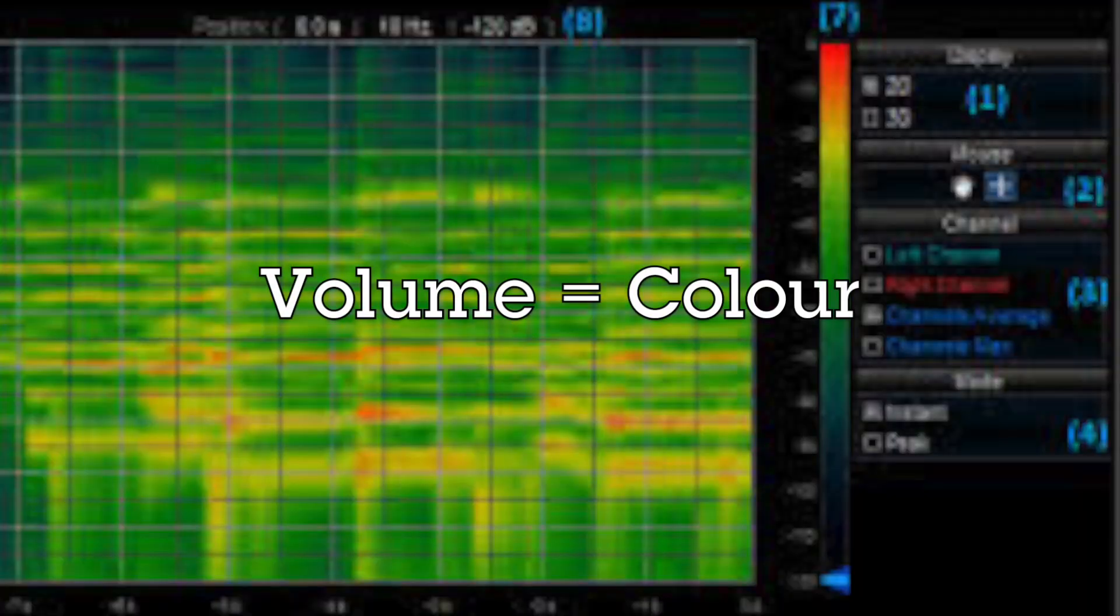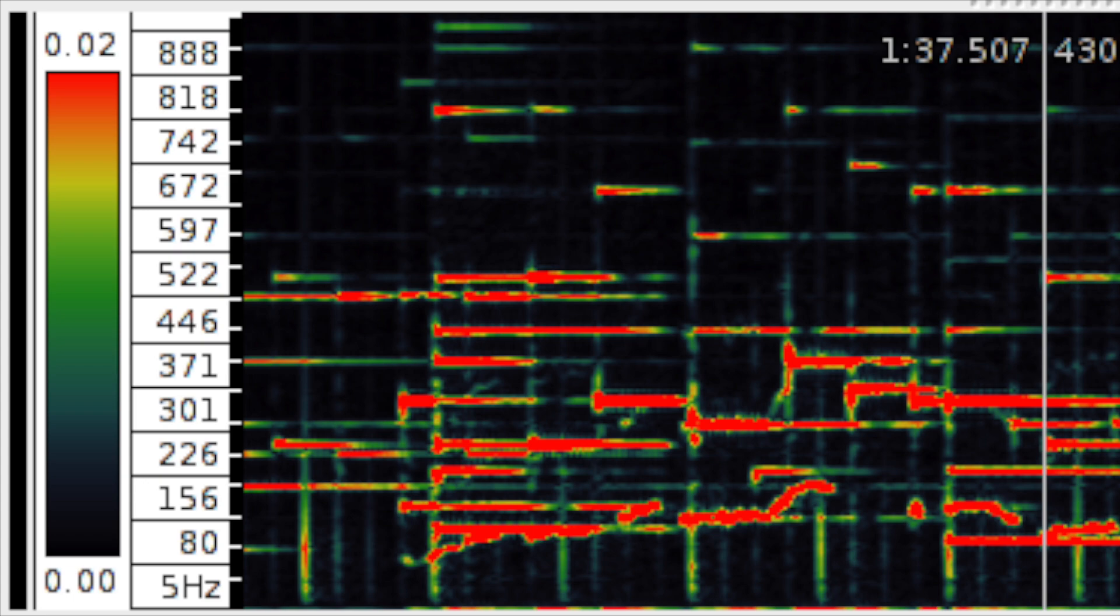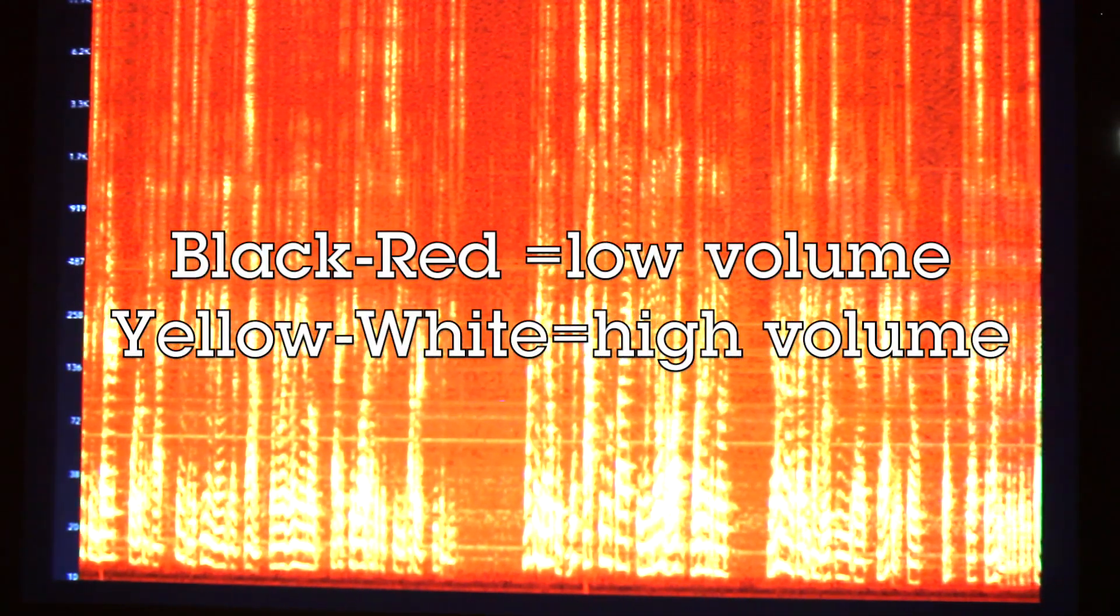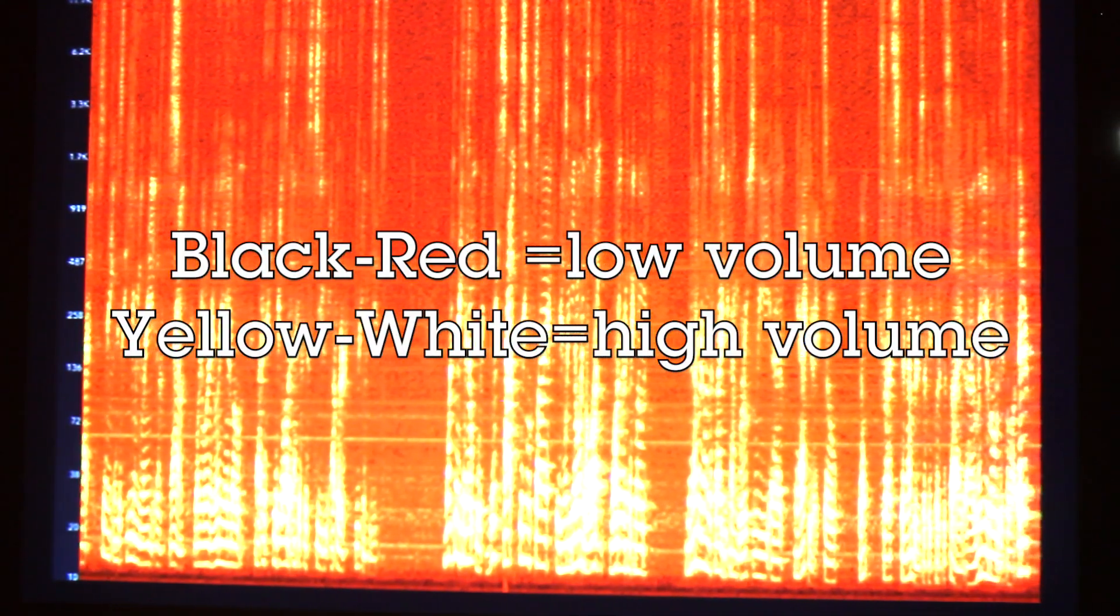Volume is shown by the color. Each spectrogram has its own color scheme. This spectrogram uses black for no sound, red then yellow, and to white for the loudest sounds.